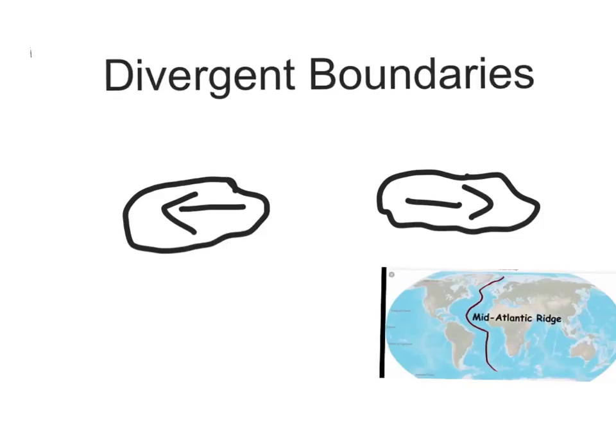Divergent Boundaries. Two plates that are moving apart. When this happens, rift valleys and mid-ocean ridges are formed. Some examples are Great African Rift Valley and Mid-Atlantic Ridge.